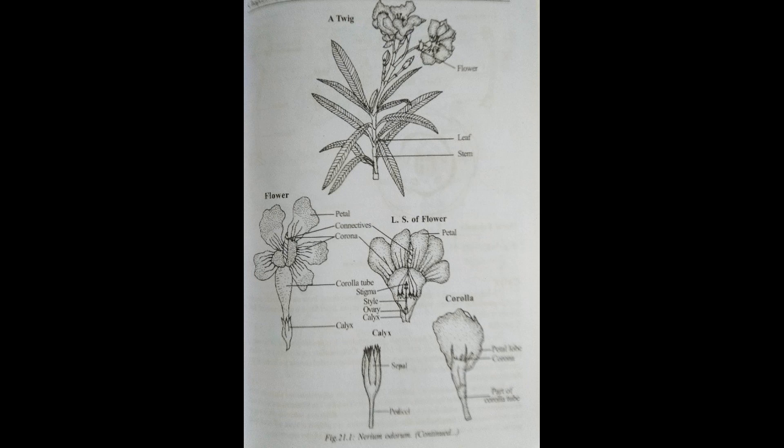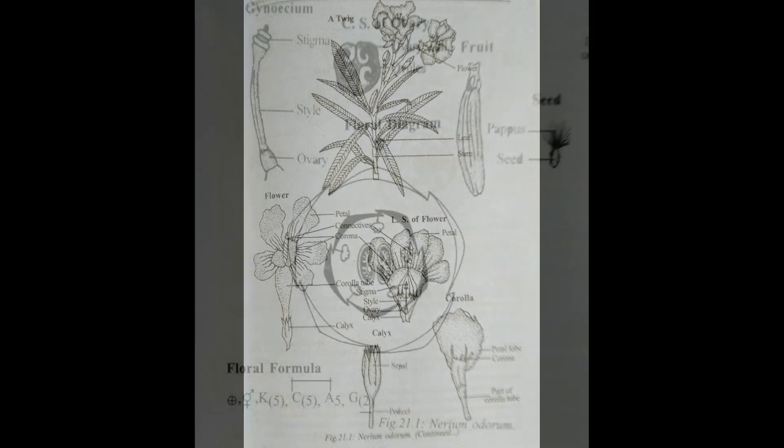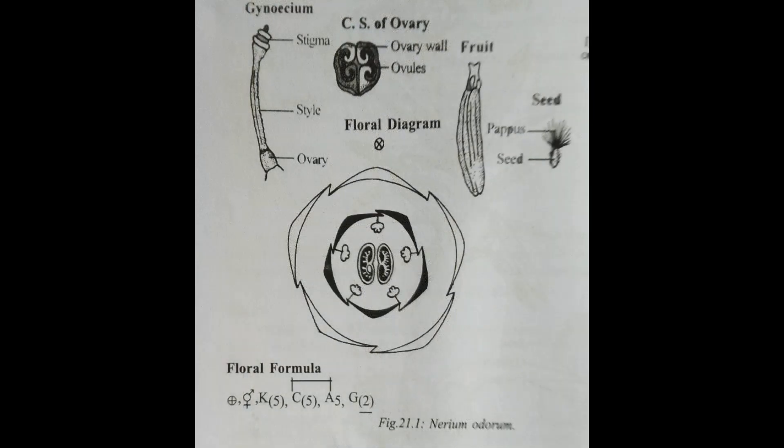The calyx consists of five fused sepals, hence commonly called gamopetalous with imbricate aestivation. Next, the corolla consists of five fused petals, funnel-shaped or tubular.